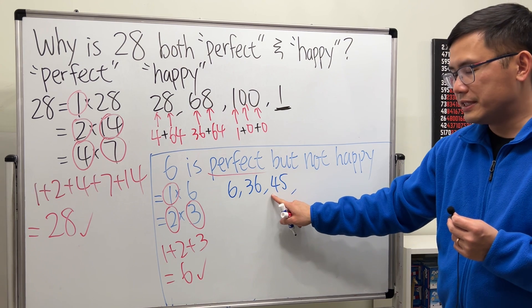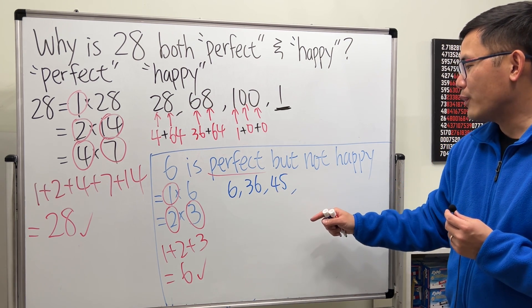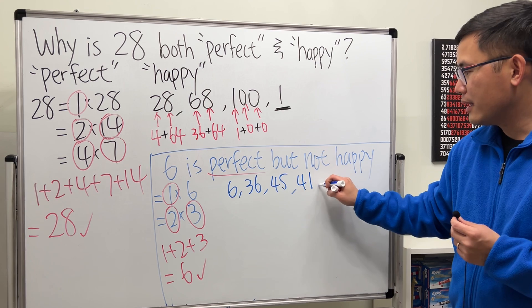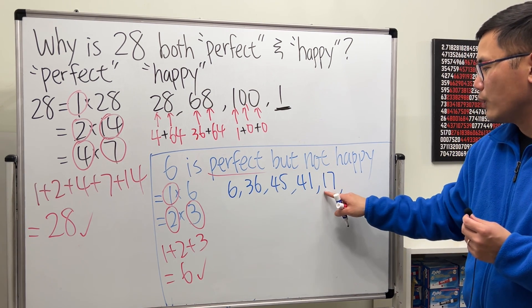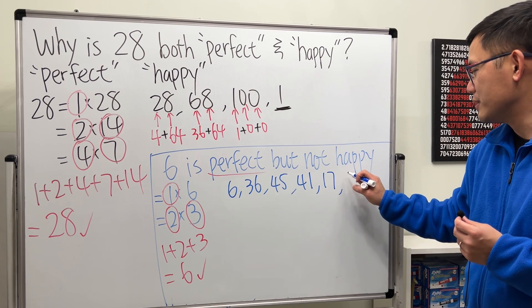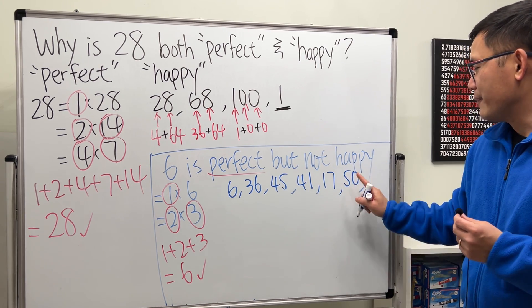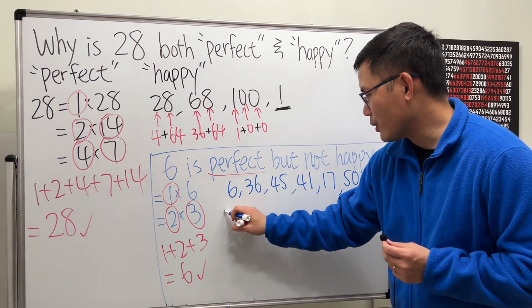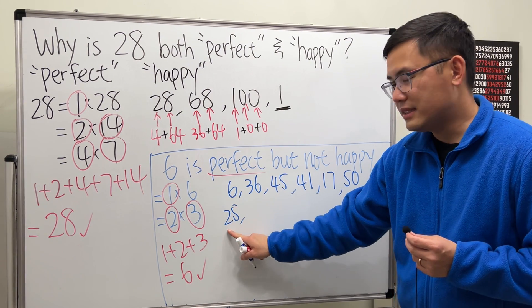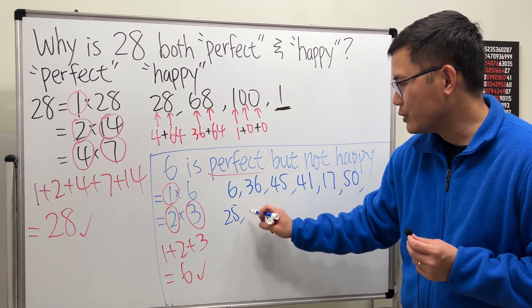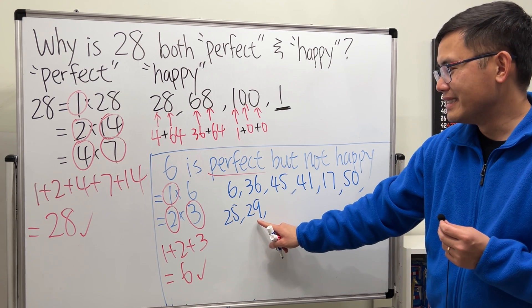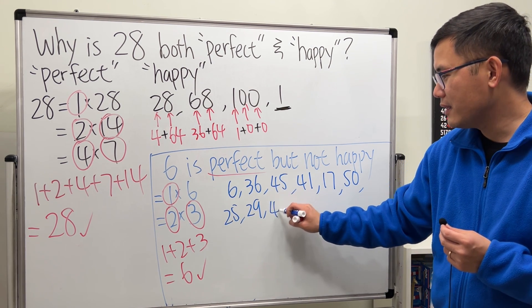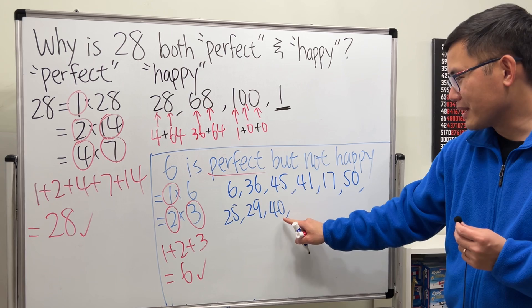And then 16 plus 1, which is 17. And then 1 plus 49, which is 50. Okay. 25 plus 0 is 25. And then this is 4 plus 25, which is 29. And then 4 plus 36, which is 40. And then 16 plus 0 is 16.